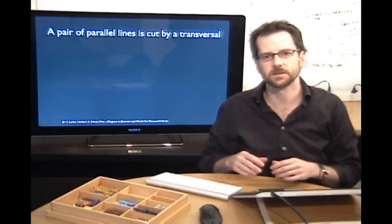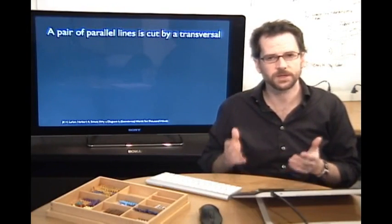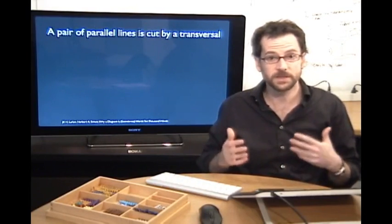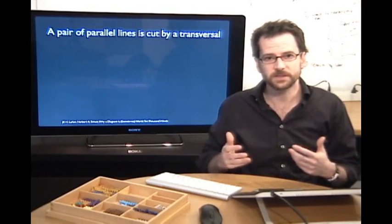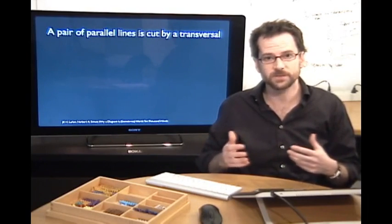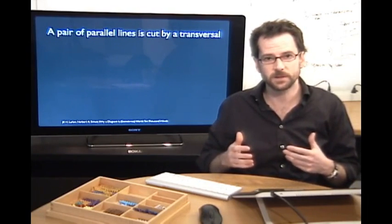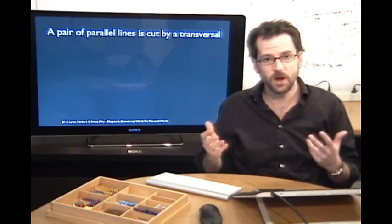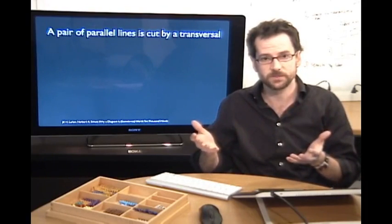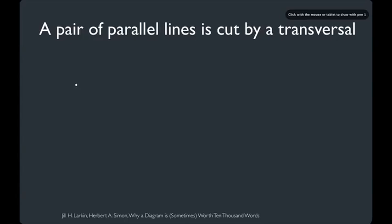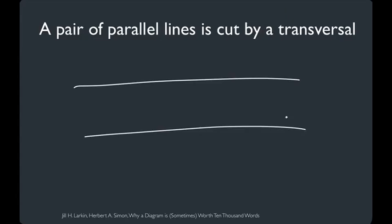Consider the sentence: 'A pair of parallel lines is cut by a transversal. This cut generates eight angles.' From the sentence, it's difficult to reason about which pairs form the alternate interior angles — in fact, if you try, you'll find yourself creating a mental image of two parallel lines cut by a transversal. With a diagram like this, however, the sentence and the diagram are informationally equivalent, but computationally different for the perceiver.